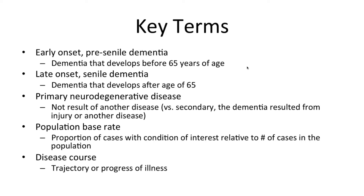Base rate is the proportion of cases with the condition of interest relative to the number of cases in the population. This proportion can impact sensitivity and specificity of detection. Disease course is the trajectory or progress of illness — for example, how does the illness behave over time?